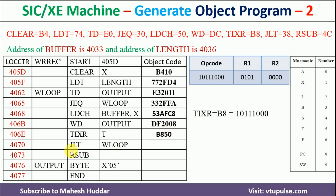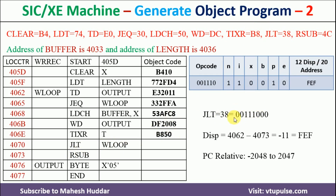Next is JLT WLOOP. JLT's opcode is 38. Most significant 6 bits written. Neither immediate nor indirect nor index addressing. E=0. Displacement = WLOOP (4062) minus PC (4073): compute 4073 − 4062 = 11, giving −11. Minus 11 falls in the PC-relative range, so P=1, B=0. Converting −11 to 2's complement gives FEF. Converting the full instruction to hexadecimal: 0011 is 3, 1011 is B, 0010 is 2, followed by FEF — giving 3B2FEF.